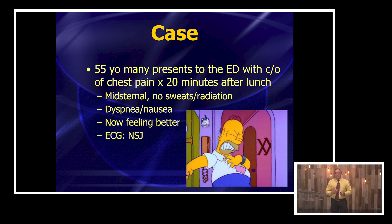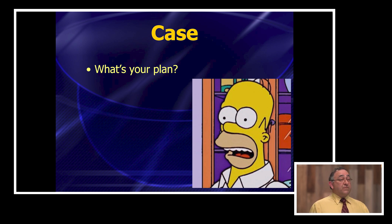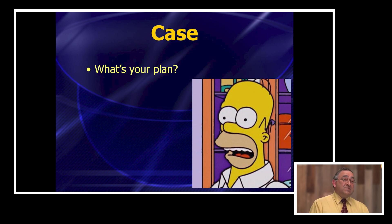The patient has some midsternal chest pain. There's no diaphoresis or radiation, but there is some shortness of breath and some nausea, and now he's feeling a little bit better. His EKG shows just some nonspecific junk. So what's your plan with this patient? It's not a slam dunk admission, but it's also not somebody you're going to feel totally comfortable sending home. This is the classic low-risk type of ACS concern.